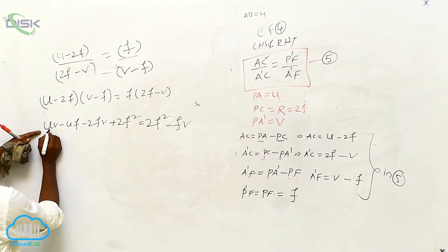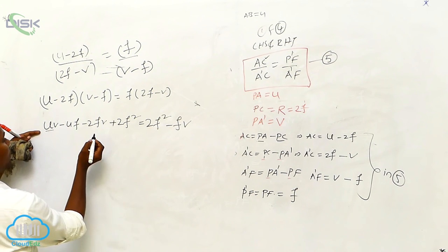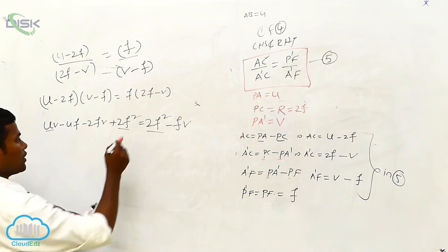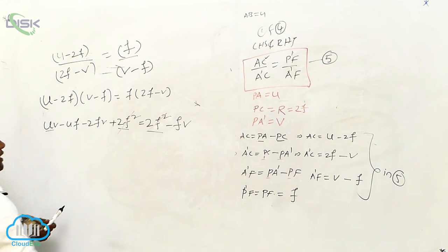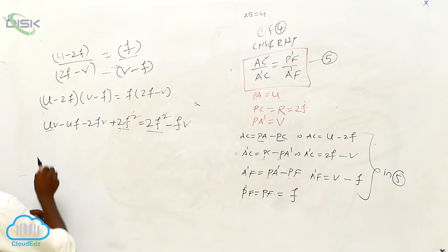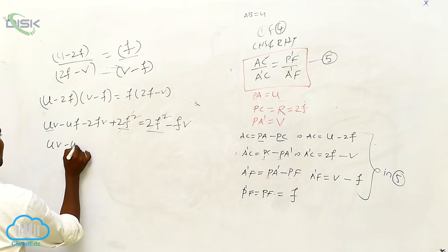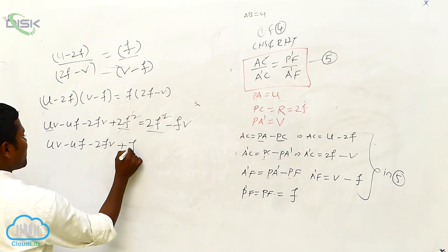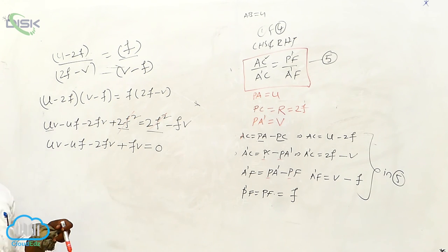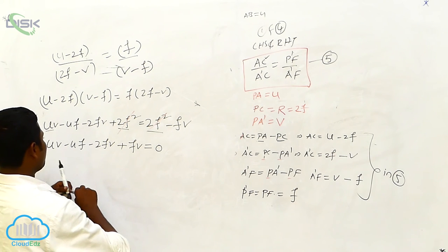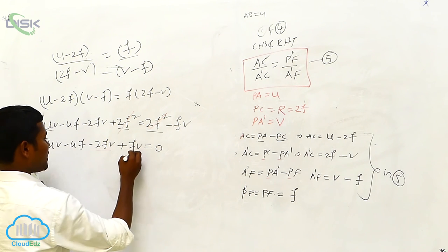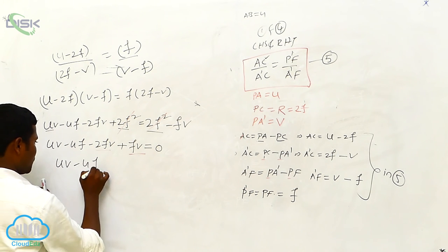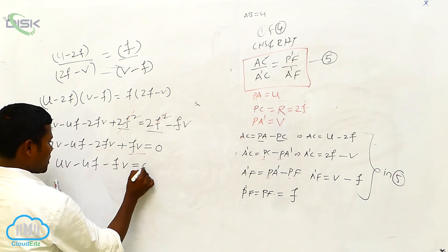Simple mathematics. UV is there, 2F squared here and here — 2F squared gets cancelled. So UV minus UF minus 2FV plus FV equals 0, which gives UV minus UF minus FV equals 0.